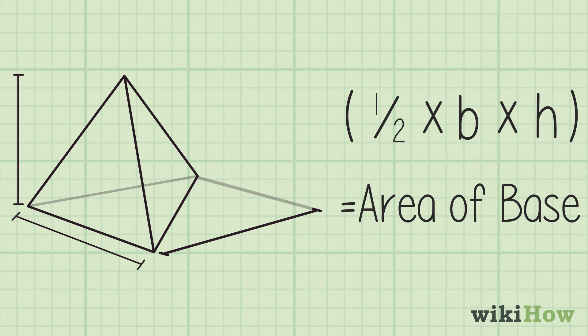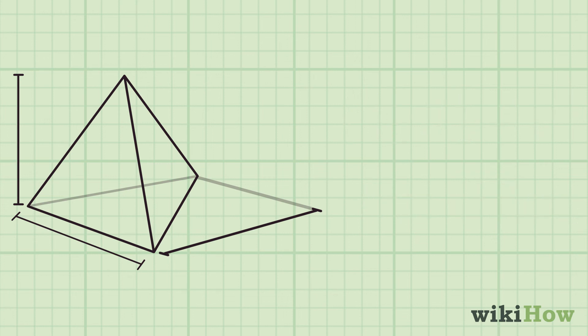From there, you can use the same formula that you used for the square-based pyramid. For example, say your pyramid has a base that's a triangle with a base width of 2 centimeters and a height of 4 centimeters.